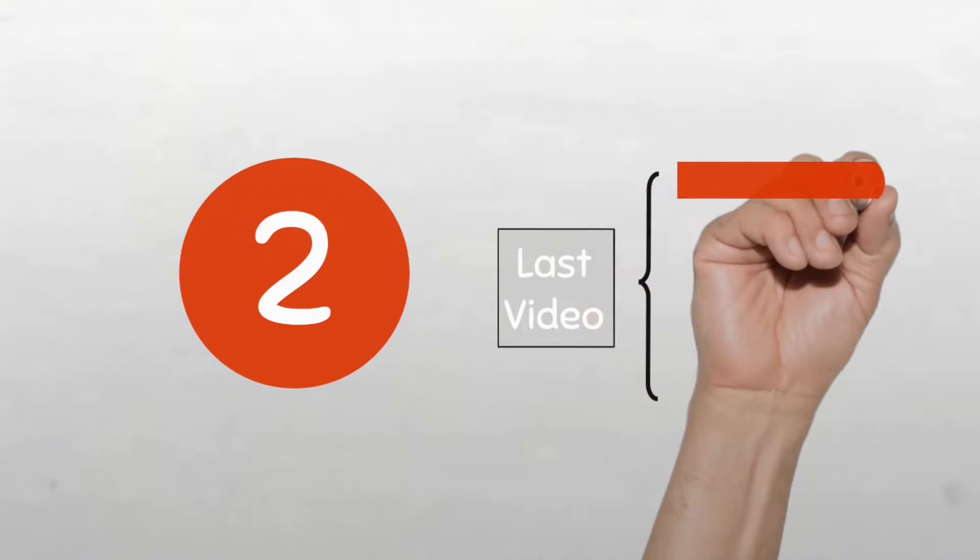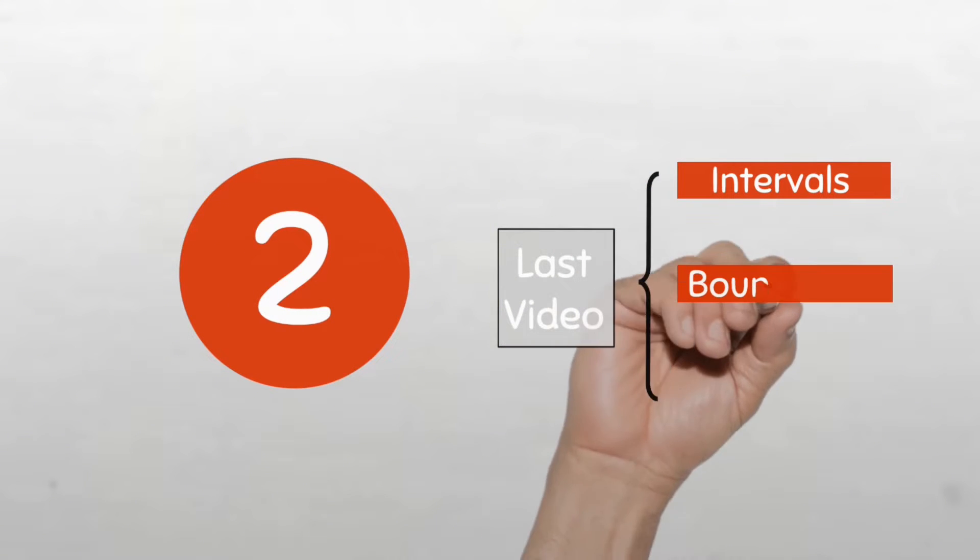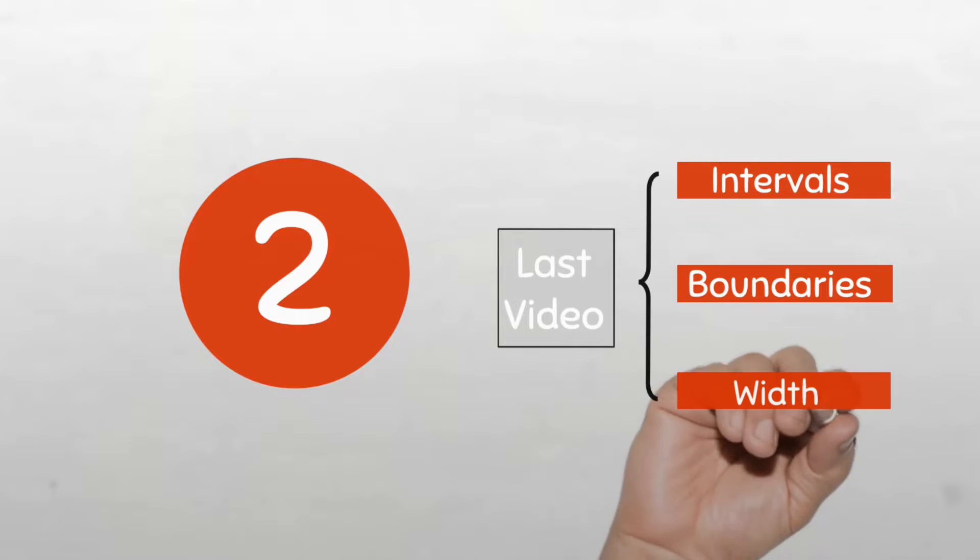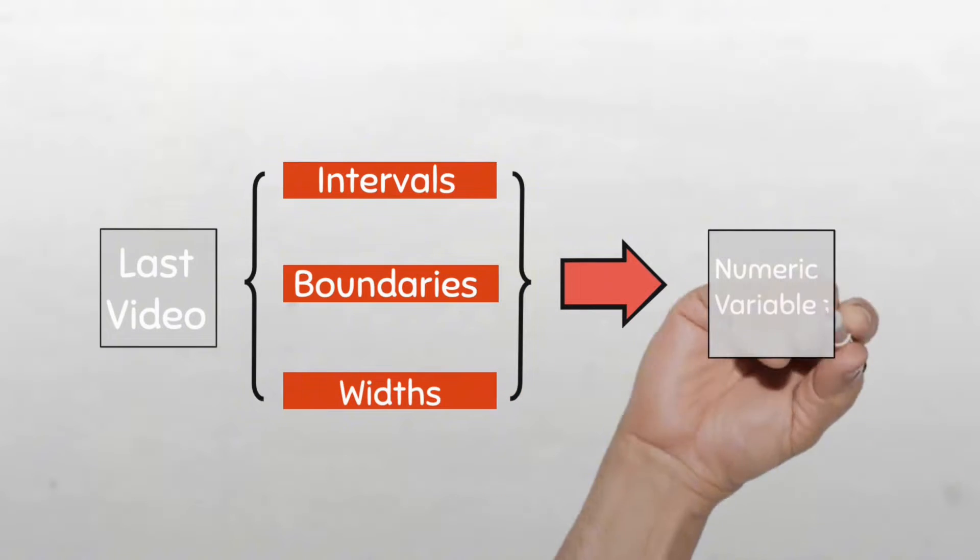We are going to discuss how the two types are particularly useful when grouping numerical data and when it's appropriate to use them. In the last video, you saw how to create class intervals, class boundaries, and class widths from a frequency distribution. We use these to help us group numerical variables for a better understanding of our data.